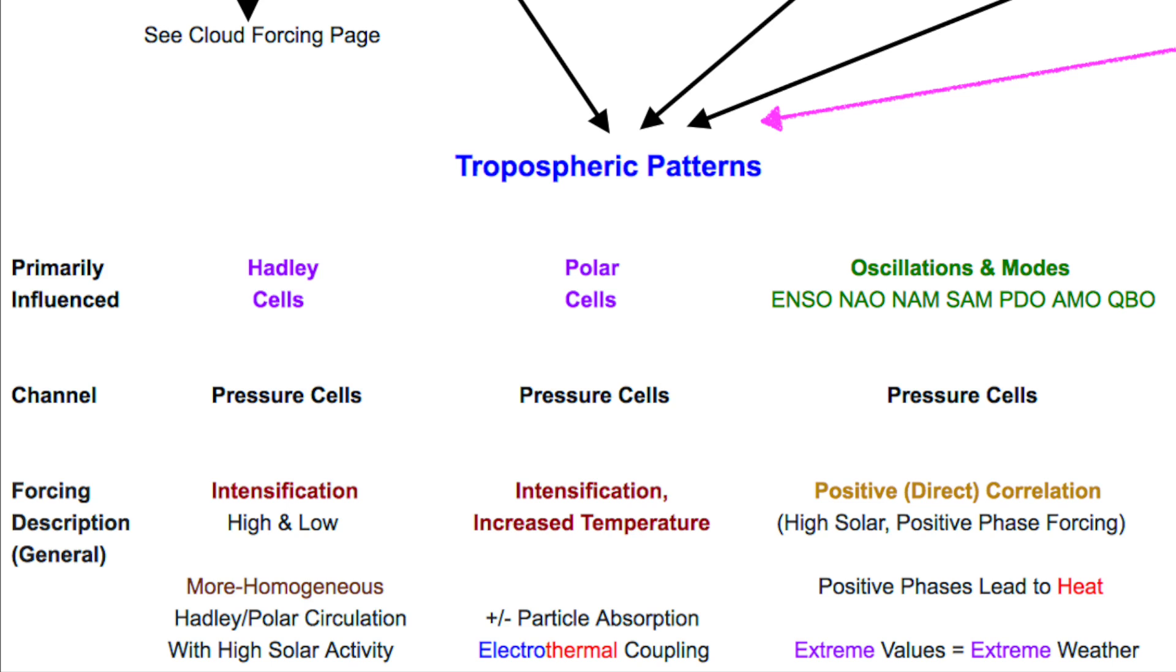Space weather affects the current going up and down through the atmosphere, and this affects the major tropospheric patterns. Both Hadley and polar cells intensify their pressure upon high space weather events—that's high and low—with more homogeneous circulation vertically and calmer, more predictable patterns.